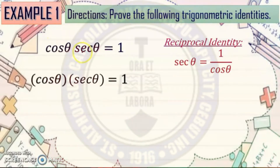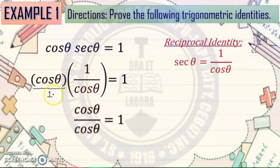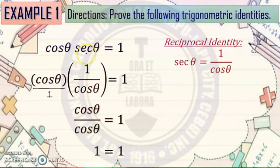Secant theta is equal to 1 over cosine theta. So in this equation, we're going to substitute secant theta with 1 over cosine theta, and then multiply. Of course, if there's no denominator shown, the denominator is 1. So you will multiply: cosine theta times 1 is cosine theta, and 1 times cosine theta is cosine theta as well. Then cosine theta divided by cosine theta equals 1. We have now proven that cosine theta times secant theta equals 1. Both sides of the equation are now the same.